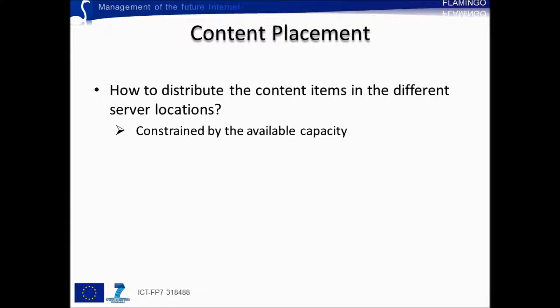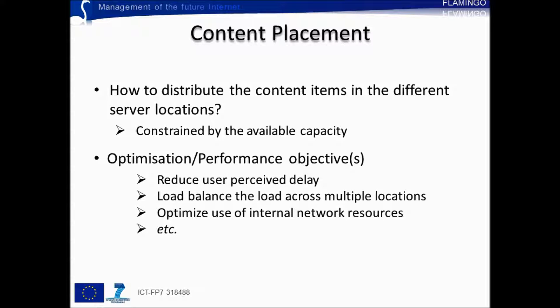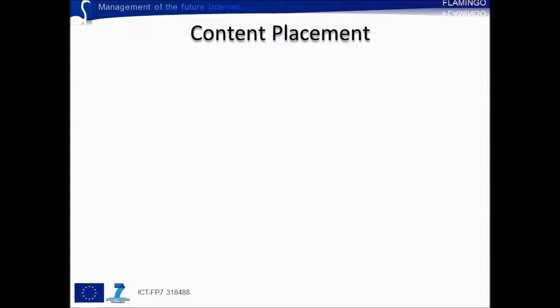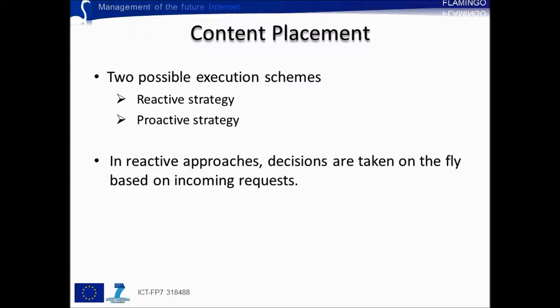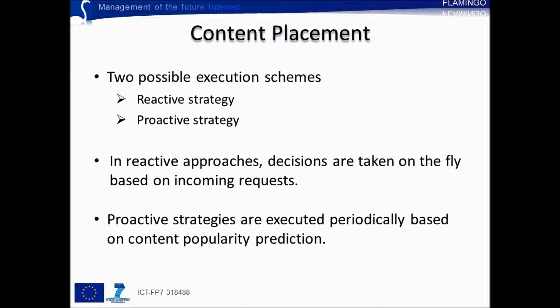Formally, content placement operations have to do with how to distribute the content items in the different server locations, given the constraints in terms of the available storage capacity at each of these locations. Placement decisions can target different performance objectives, such as reducing the overall delay perceived by the users or balancing the request processing load across multiple locations. They can also focus on optimizing the use of internal network resources. Placement decisions can follow two execution schemes: a reactive one or a proactive one. In a reactive scheme, placement decisions are taken on the fly upon receiving content requests. In contrast, in a proactive approach, placement decisions are taken periodically based on the prediction of content popularity for the next configuration period.